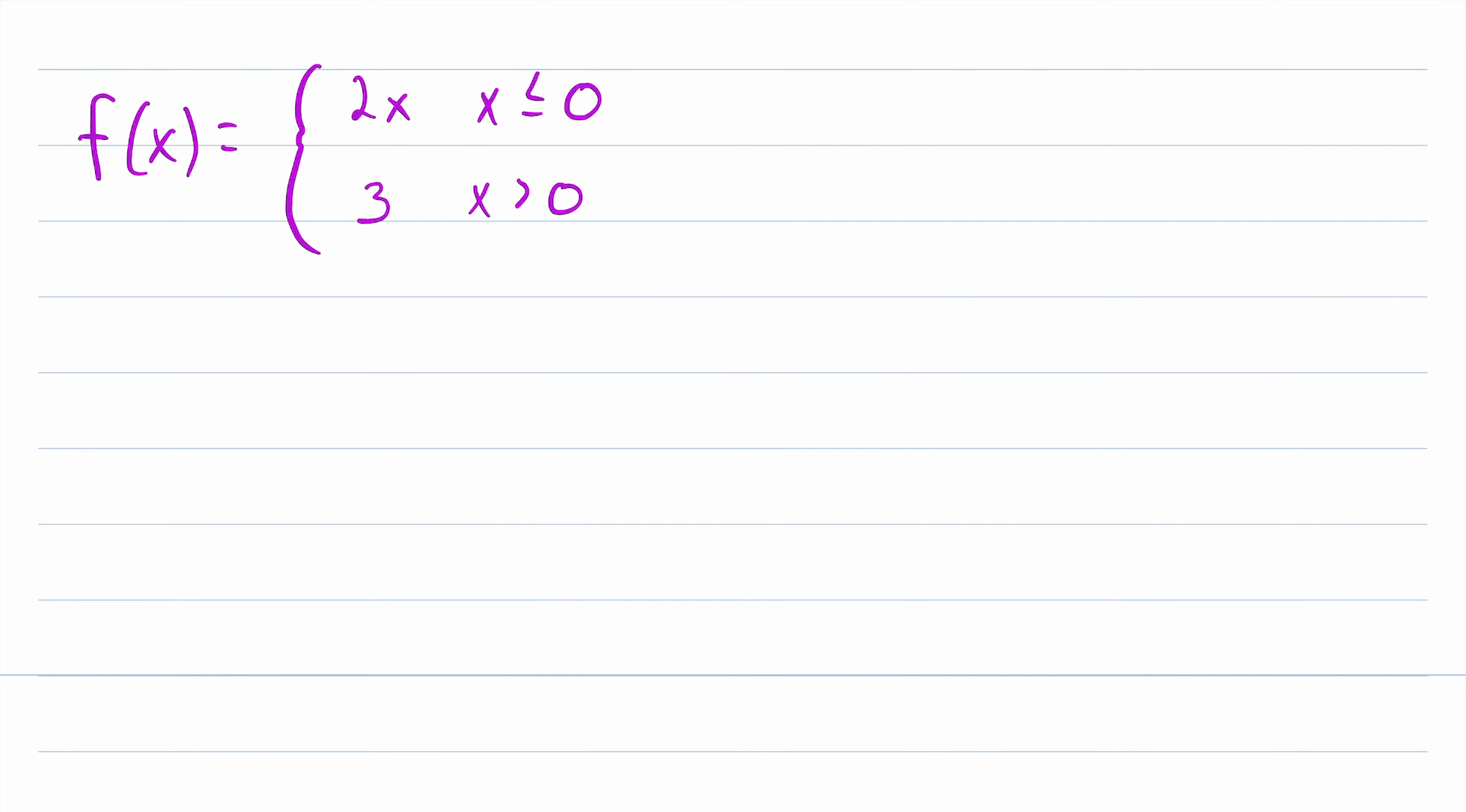Piecewise functions, of course, are a bit more complicated, and here is an example of a piecewise function. We have one rule for all input values that are less than or equal to 0, and we have a different input rule for all input values that are greater than 0. So let's go ahead and sketch the graph of this function.